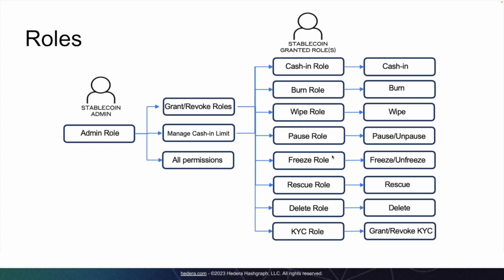Let's talk about the roles and their permissions. The admin is the one that has all the permissions. A user with this role can cash in, burn, wipe, freeze, pause, and more. The admin can also grant or revoke permissions or roles for other users.